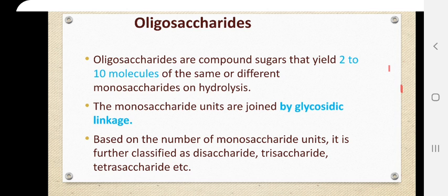These are named accordingly. Most of the time all these monosaccharide units might be only one type, or sometimes more than one type of monosaccharide unit might be present. The next question is how these oligosaccharides are formed — they are formed by a special kind of bond called a glycosidic linkage.